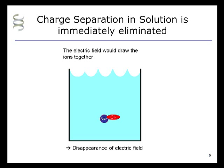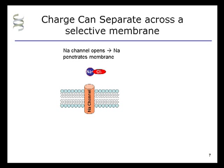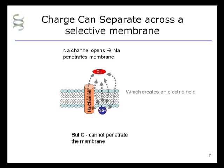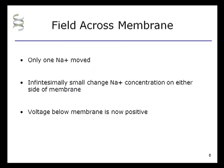However, across a selective membrane such as the plasma membrane, charge can separate. For example, when a sodium channel opens, it results in sodium ions crossing the membrane, which can create an electric field — but chloride cannot penetrate the membrane. Now there is an electric field across the membrane because there is a positive charge not accompanied by a negative charge right next to it. In this example, only one sodium ion moved, and this movement did not change the sodium concentration on either side of the membrane.